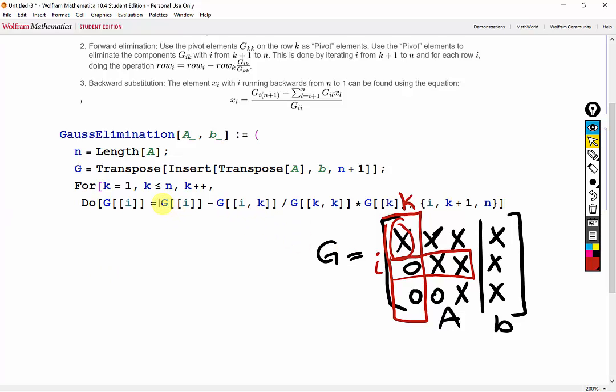And notice what this formula does is it sets the value of G of I to 0 based on the pivot value. Now I'll just erase a picture here so that we have more room to work with.